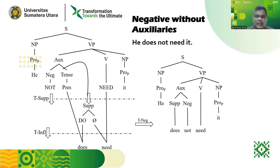That is how we analyze negative sentences using a tree diagram. I have demonstrated both types of negative sentences: the first one using auxiliaries and the second one without using auxiliaries. I hope you can understand how to analyze any negative sentences using a tree diagram. That's all — see you in the next video.